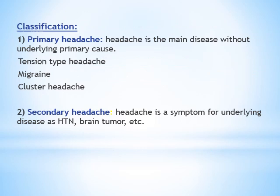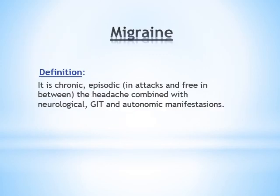We can classify headache into primary and secondary headache. Primary headache is the headache in which the headache is the main disease without any underlying cause, such as tension-type headache, migraine, and cluster headache. Secondary headache is the type in which headache is a symptom of an underlying disease, such as hypertension, brain tumor, and many other causes.